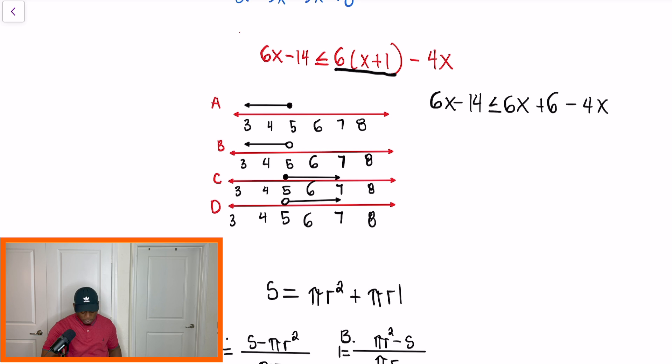So we're going to add our like terms now. And once we do that, our equation is going to simplify to 6X minus 14 is less than or equal to 2X plus 6. And just like a regular equation, we want to have variable on one side of the inequality, numbers with no variable on the opposite side of the inequality. So what I'm going to do is I'm going to subtract 2X from itself and its like term. And that will give me this expression here. 4X minus 14 is less than or equal to 6.